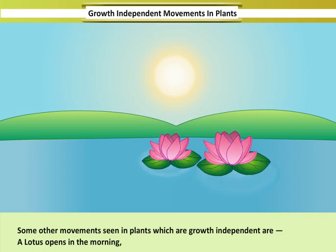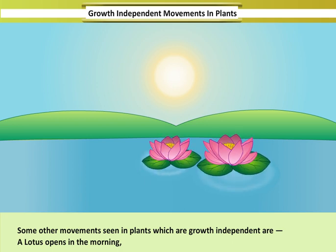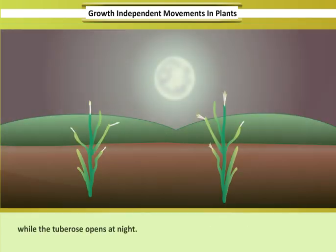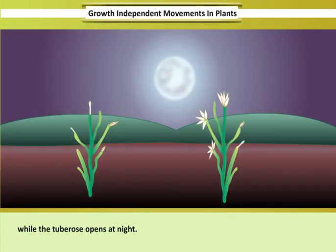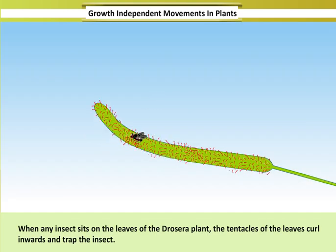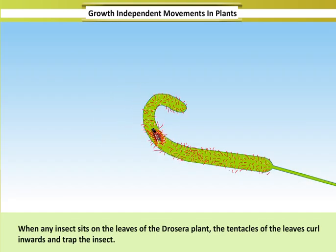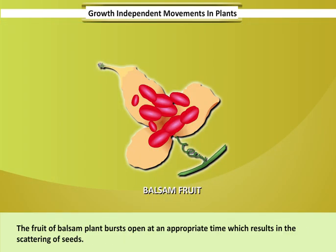Some other growth independent movements seen in plants: a lotus opens in the morning while the tuberose opens at night. When any insect sits on the leaves of the Drosera plant, the tentacles of the leaves curl inwards and trap the insect. The fruit of the balsam plant bursts open at an appropriate time, which results in the scattering of seeds.